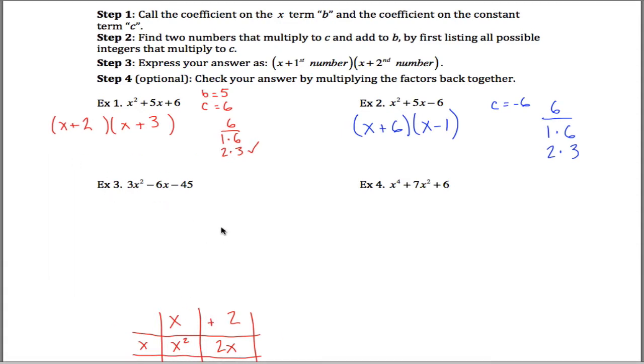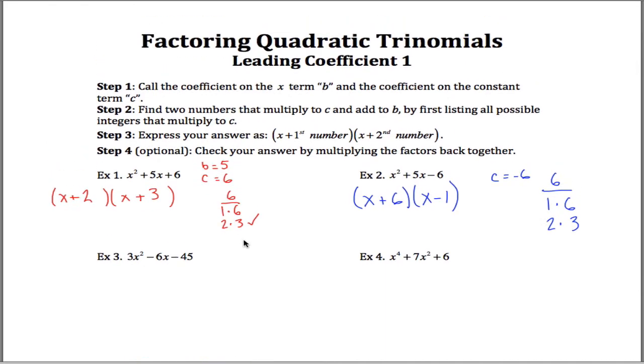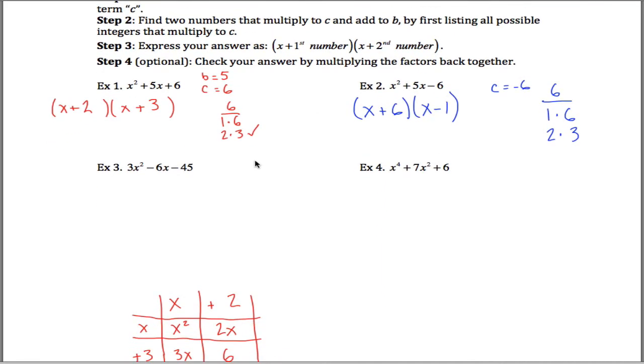Moving on to the third one, you might have a problem when you see this third one because I did say that the leading coefficient has to be a 1. Don't forget that you can always factor out the greatest common factor before you even get started. So when you see this thing right here, what I was hoping you'd notice is that 3 is common to all three of our terms here. Before we even start we can factor out a 3. If I take out a 3 from 3x squared I'm left with x squared, if I take out a 3 from negative 6x I'm left with negative 2x, and if I take out a 3 from negative 45 I'm left with negative 15.